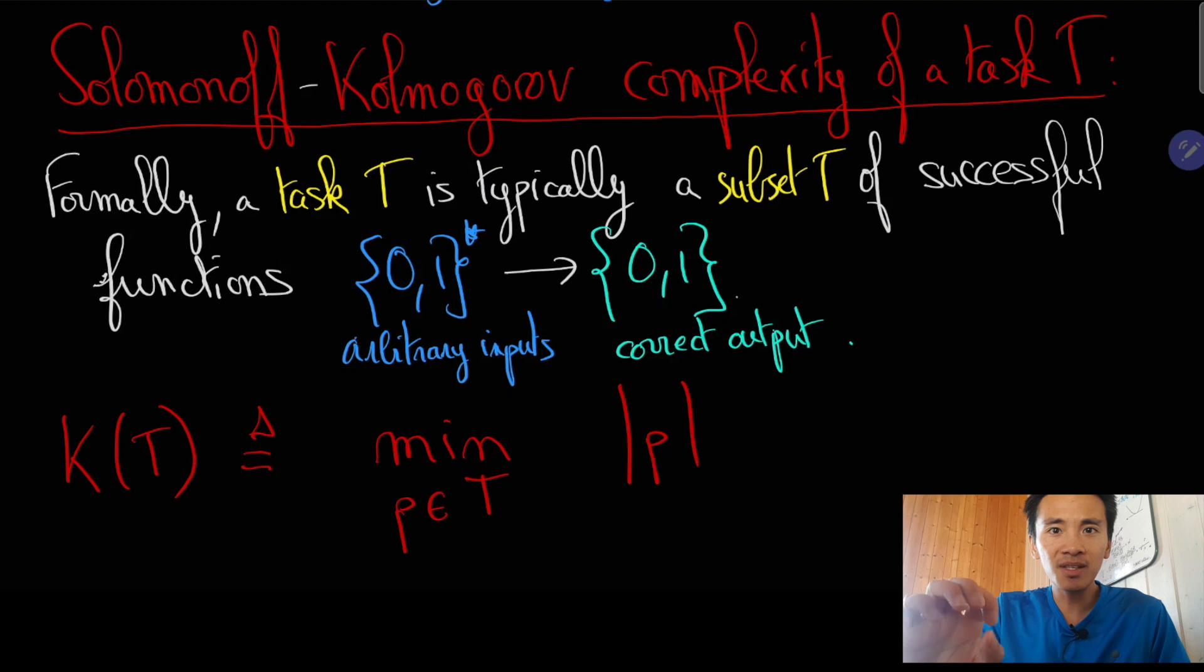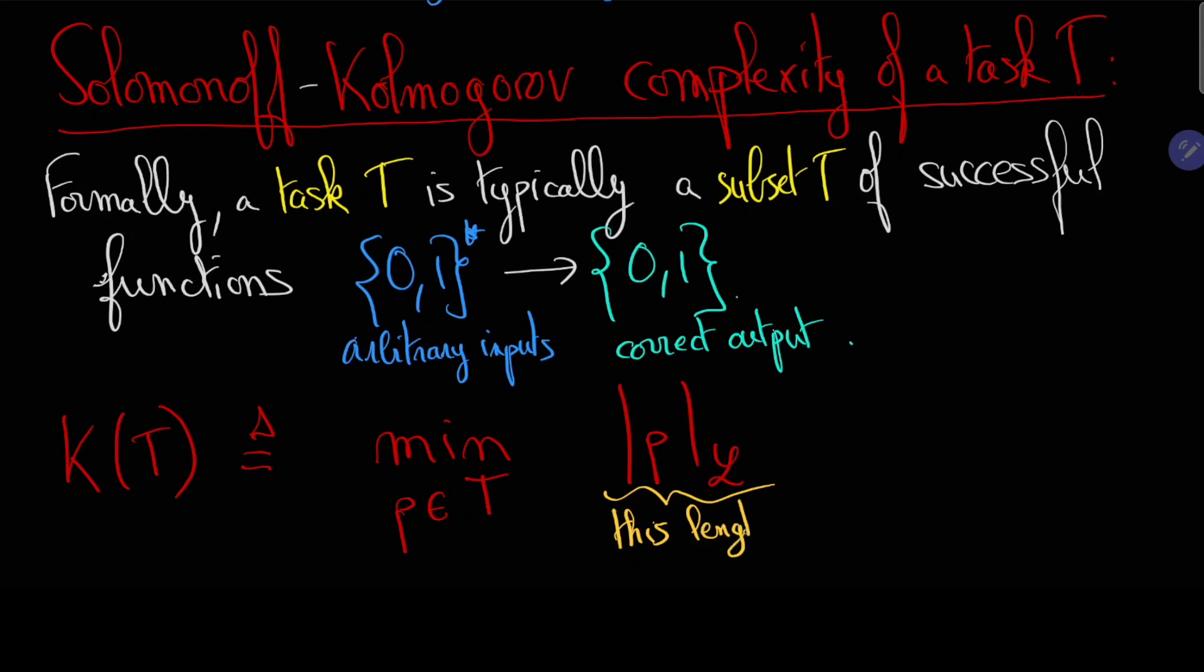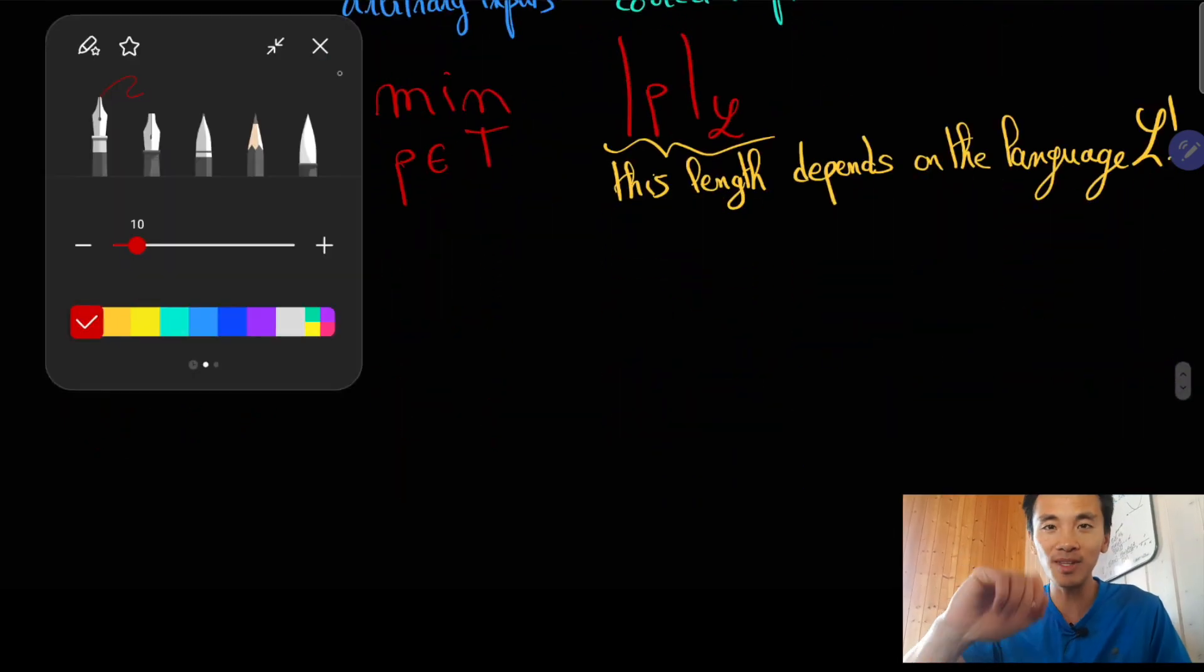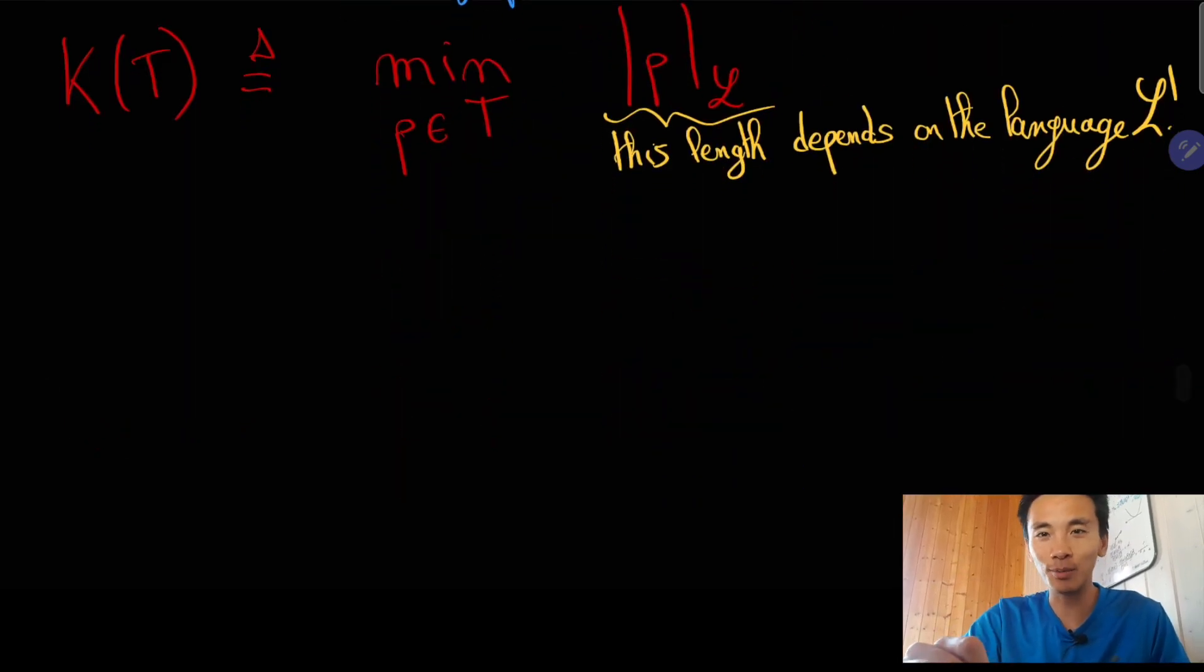Having said all of this, there remains one key feature of Solomonoff's definition that may seem unsatisfactory. Namely, the Solomonoff-Kolmogorov complexity depends on the programming language used to describe the algorithms to solve the task or on the Turing machine that indirectly defines the machine language that ought to be used. And on this issue, I really wanted to cite Solomonoff himself.